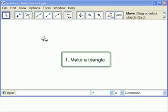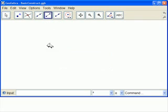So first we need a triangle. So let's get our segment tool. Let's make a triangle: A to B, B to C, and C to A.